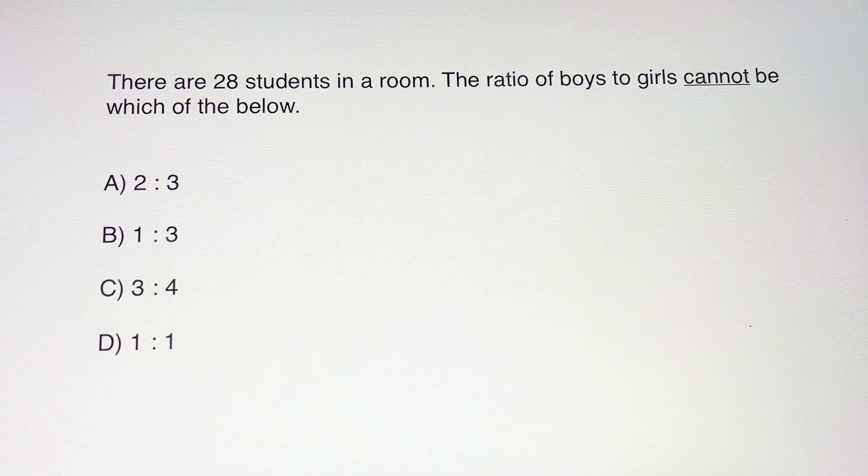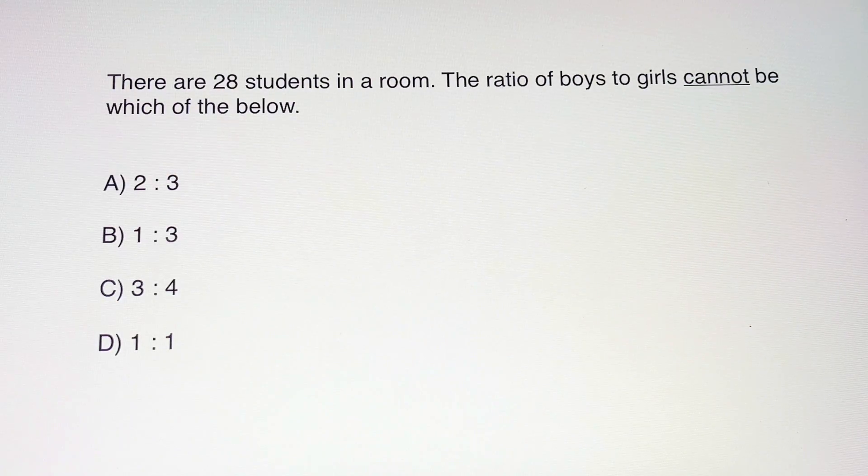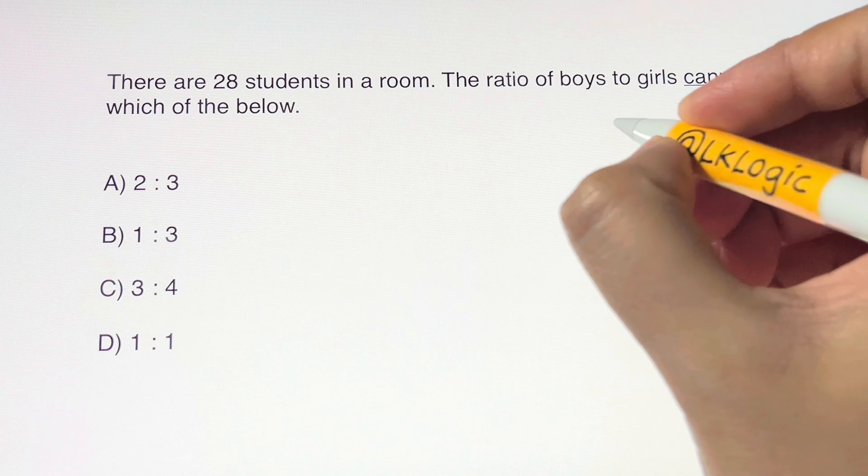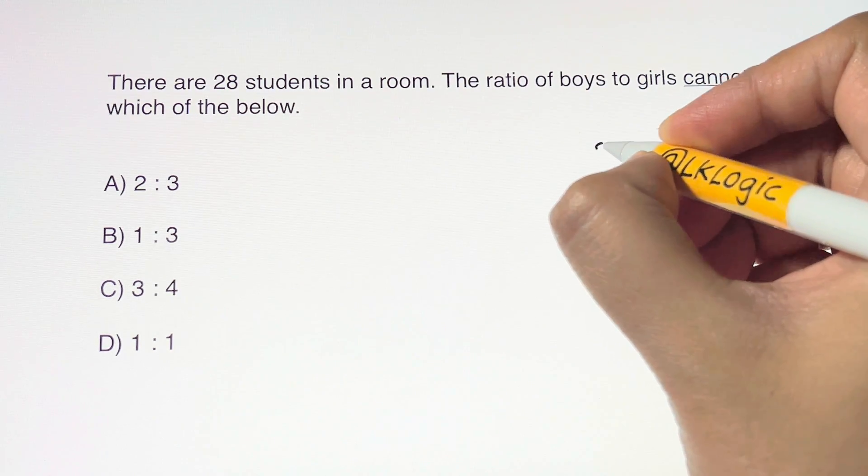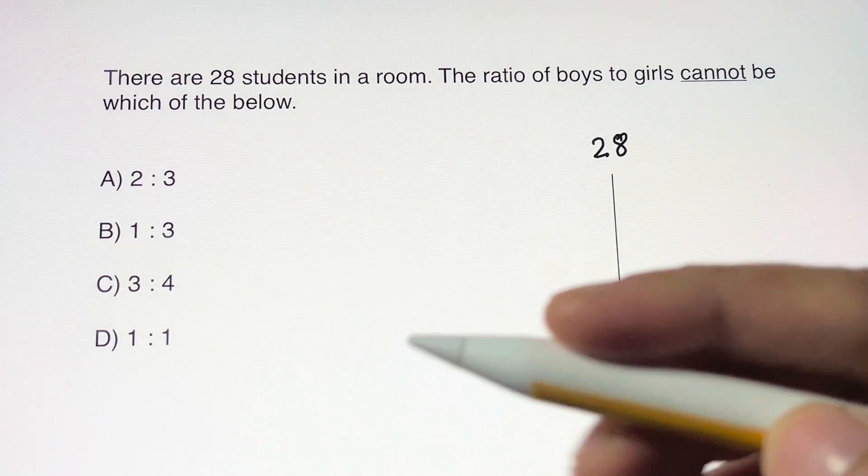So for this, first we are going to find the factors of 28. How do we find the factors of 28? We just write the number 28, draw a straight line, and start with the least possible number, which is 1.